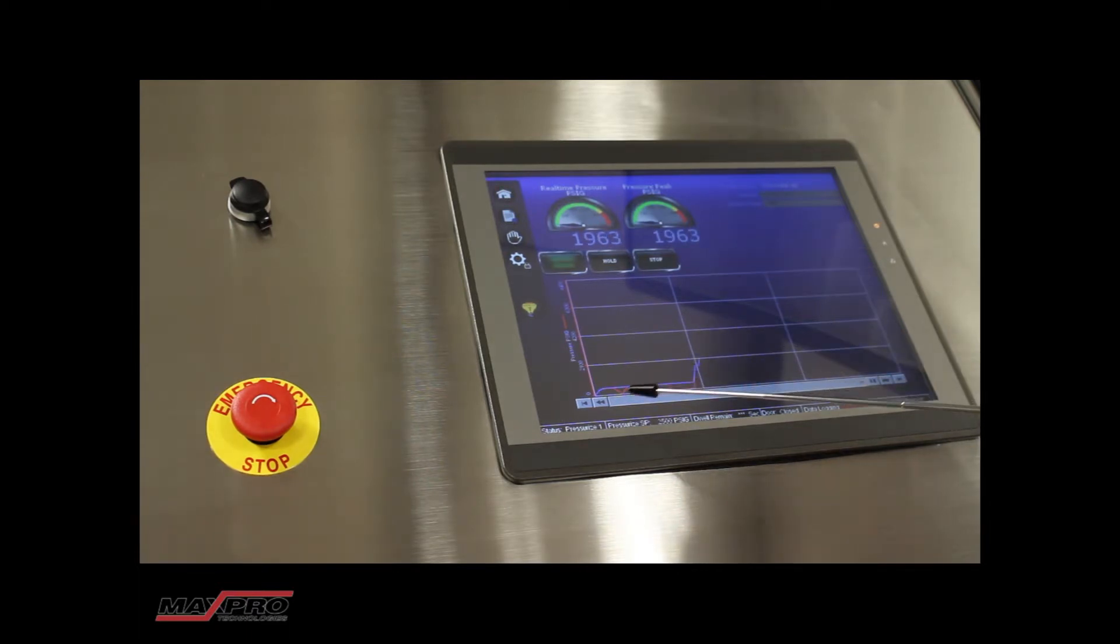You can see on the graph here that the pressure is being trended in real time as it goes along. So for the example of this test we have a 2500 PSI ramp and hold. Once you hit that first hold point it will ask for an acknowledgement before taking you to the next pressure step.